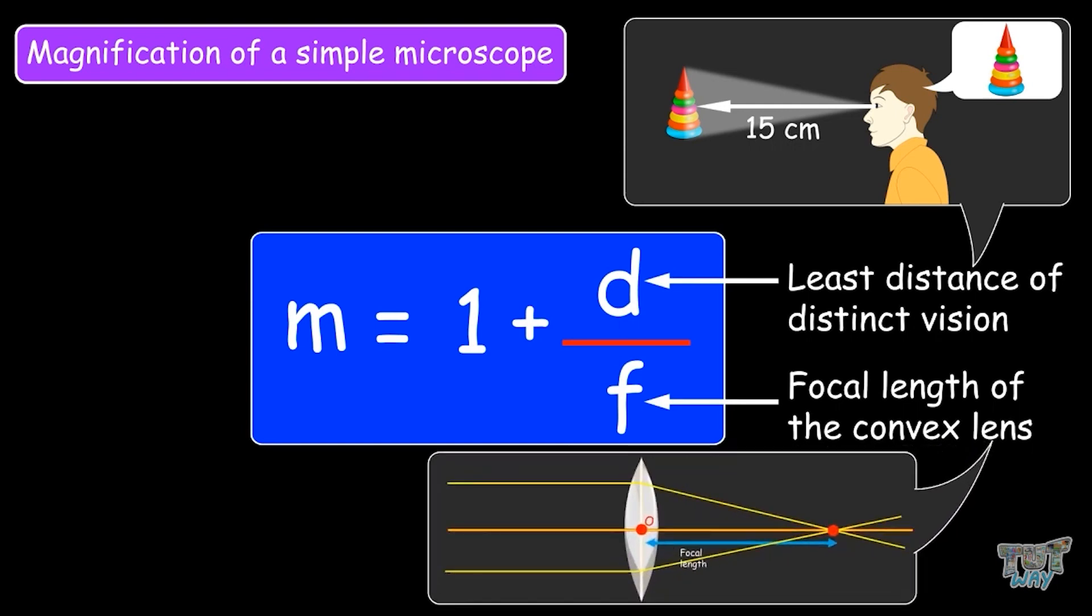So magnification depends upon the focal length. The lower the focal length, the greater will be the magnifying power of the simple microscope. Now we know what is a simple microscope, let's learn about the types of other microscopes that exist.